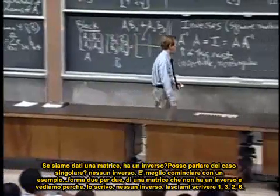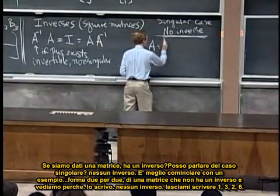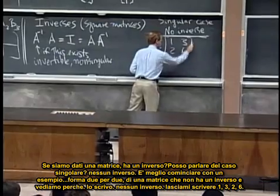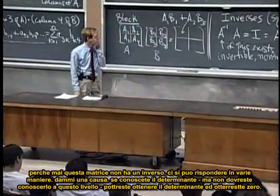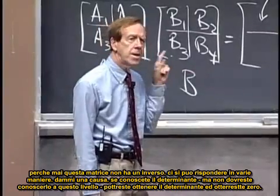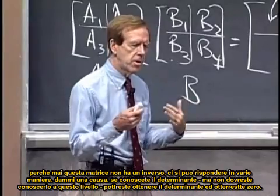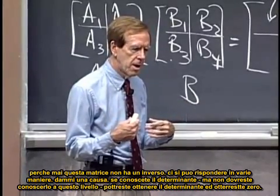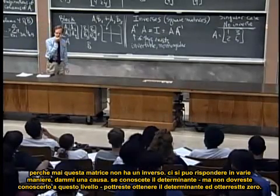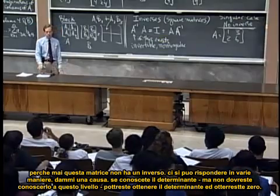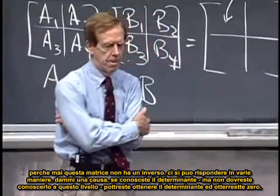And let's see why. Let me write one up. No inverse. Let me write out one, two, three, six. Why does that matrix have no inverse? You can answer that various ways. Give me one reason. Well, you could, if you know about determinants, which you're not supposed to, you could take its determinant and you would get zero.